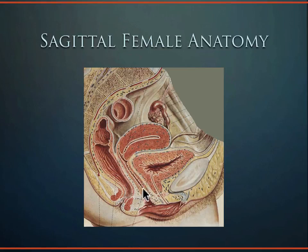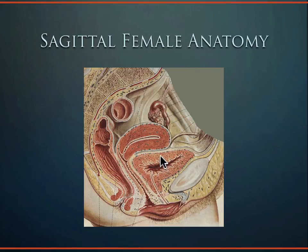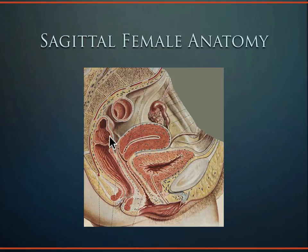Combining the 45-degree pelvic tilt with the 90-degree angle between the anteverted uterus and vaginal vault makes things complicated. As the bladder fills with urine, it expands and pushes the uterus, changing uterine flexion depending on bladder fullness. The area between the bladder and uterus is the anterior cul-de-sac, also called the vesicouterine pouch — a potential space for fluid. More commonly, fluid collects in the posterior cul-de-sac, also called the rectouterine pouch or pouch of Douglas.